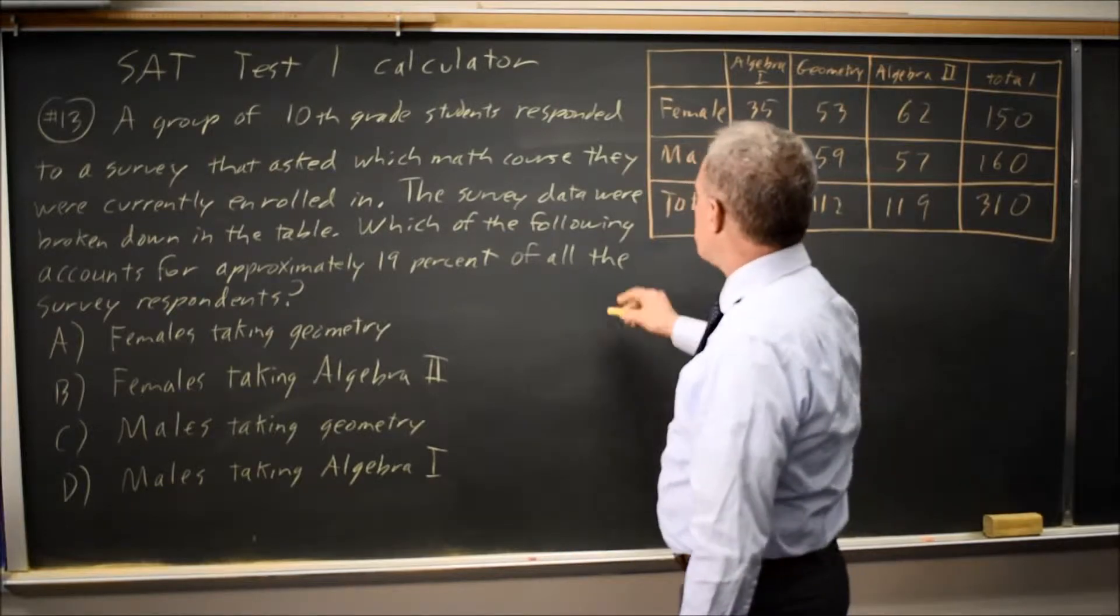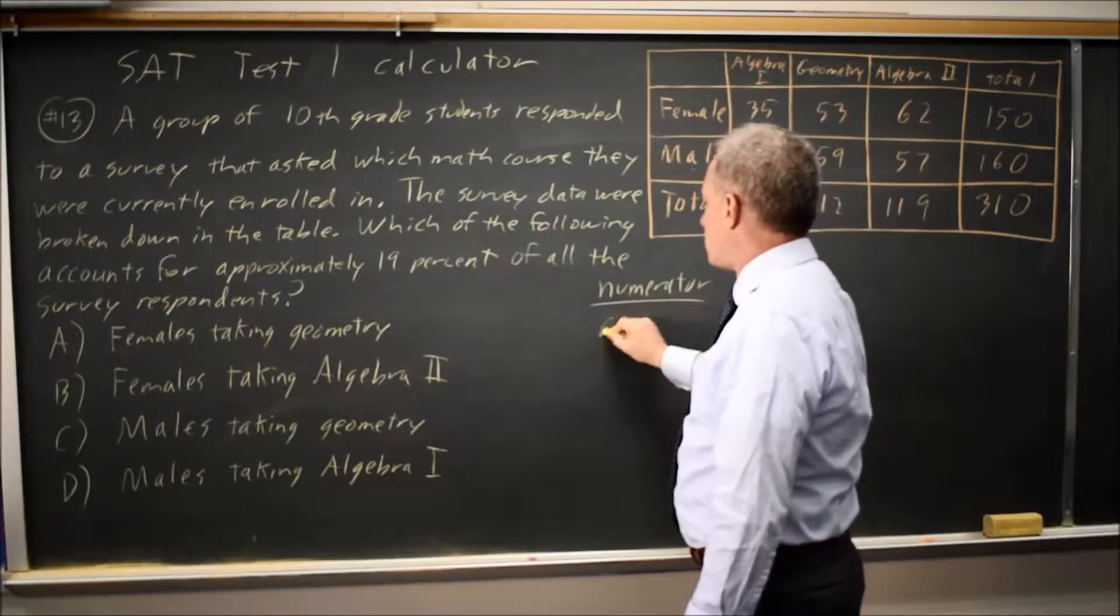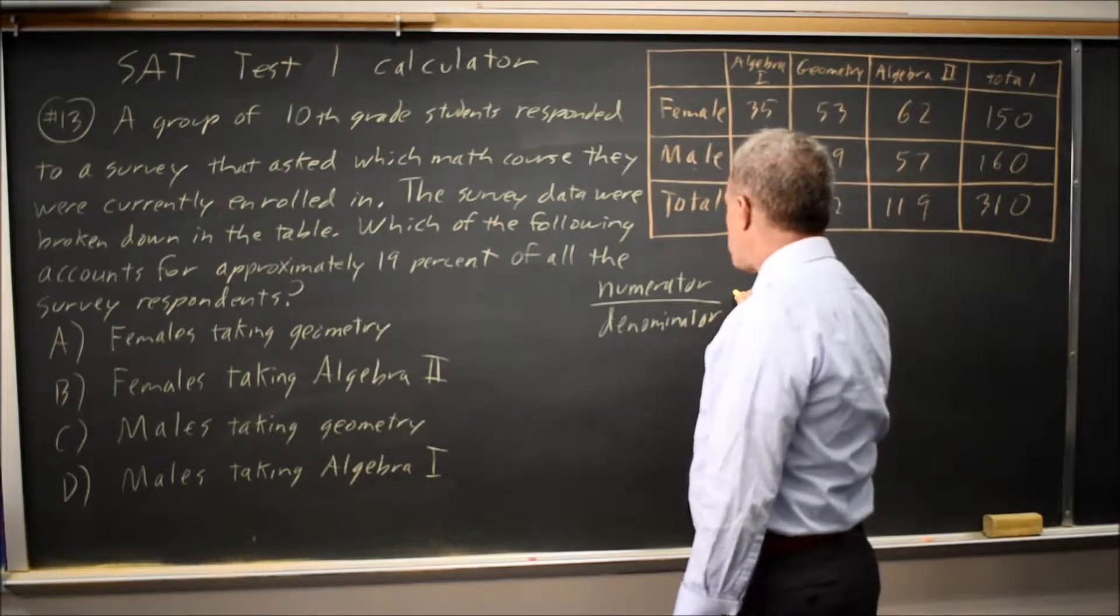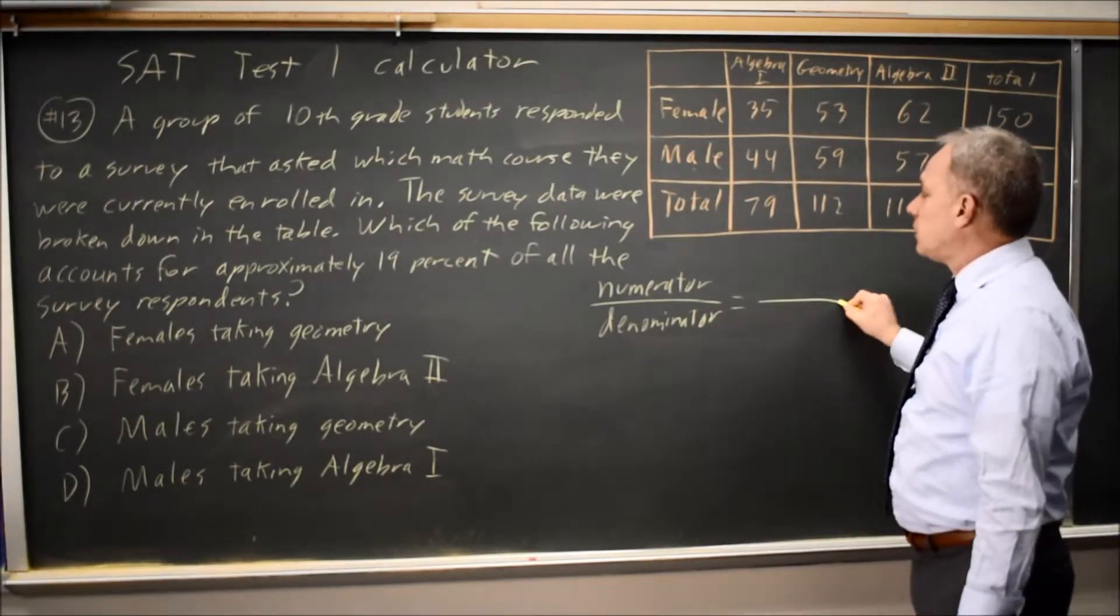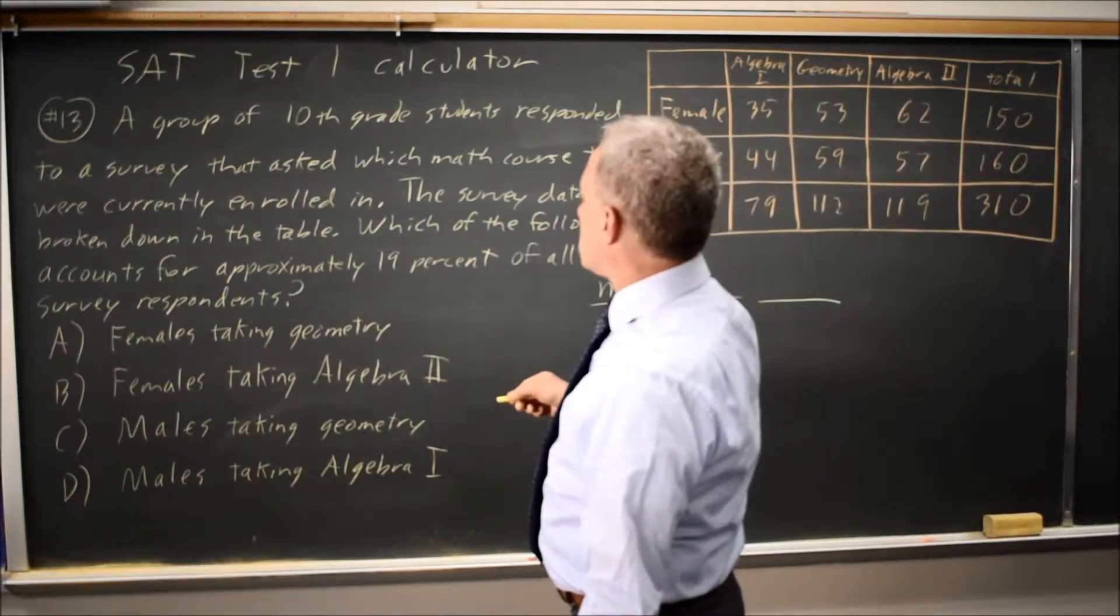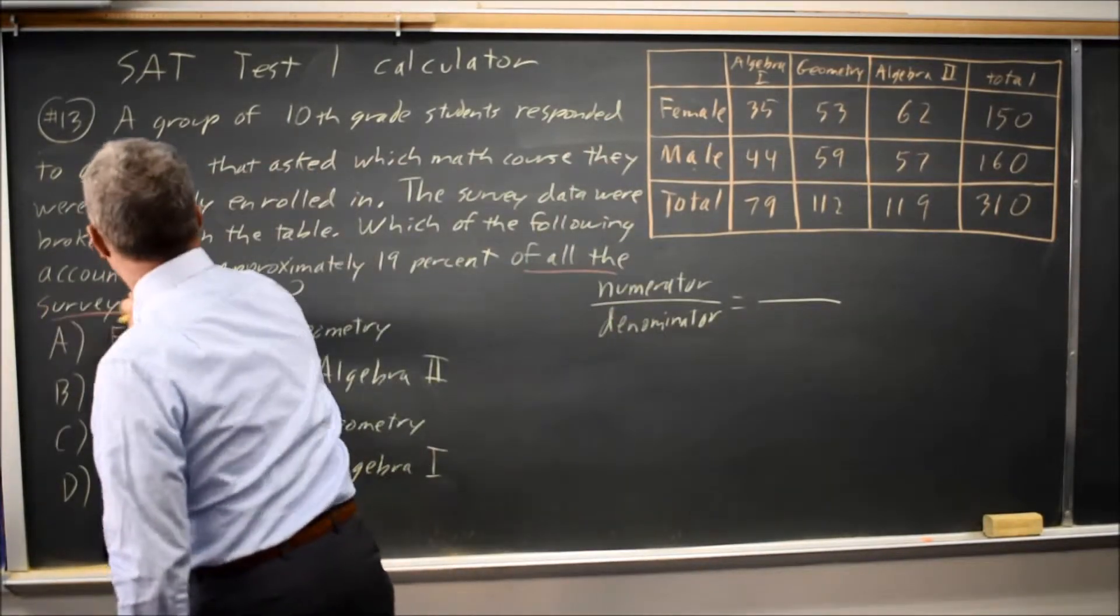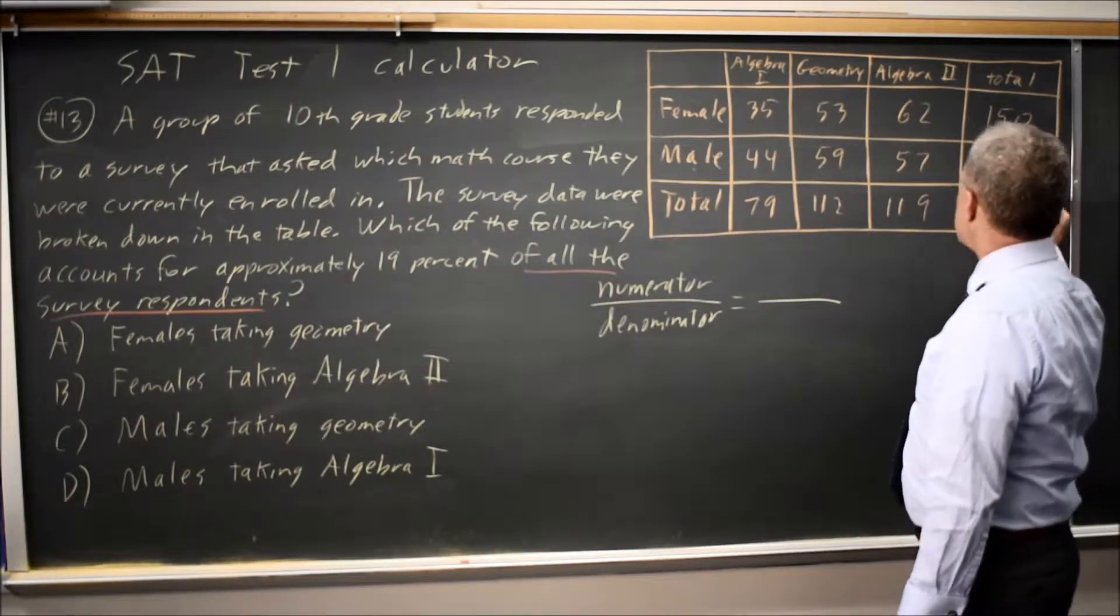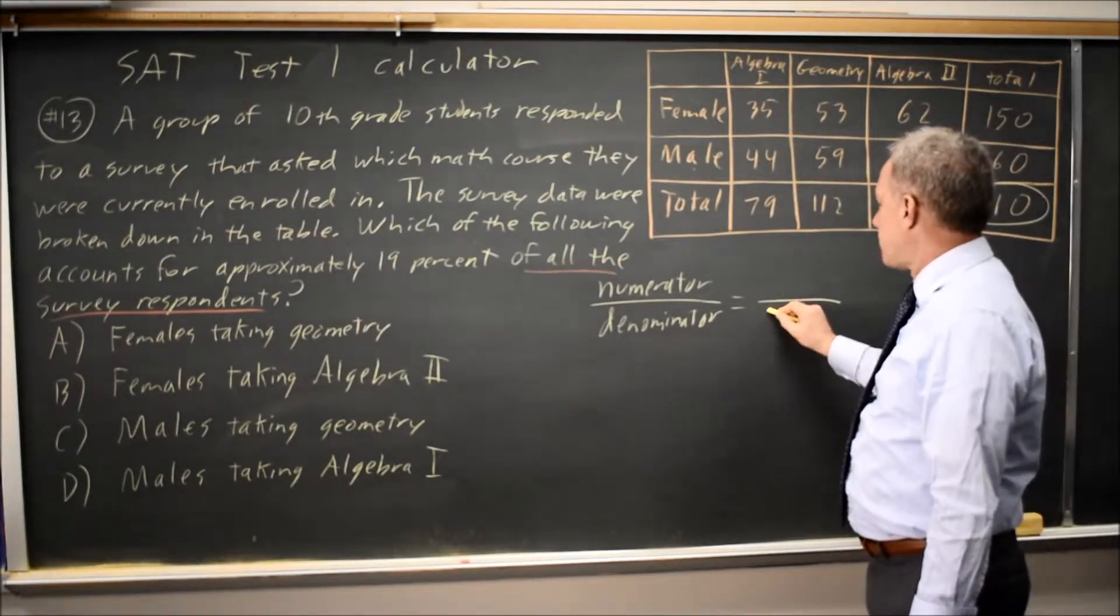In each of these questions, I'm looking for a numerator and a denominator to find a proportion. In this particular one, they've told me what that proportion is going to be. But I still need to identify my denominator. The question is 19% of all respondents to the survey. So of all respondents would be the total from the table, which is 310. And the number of individuals who could be chosen is your denominator, 310.